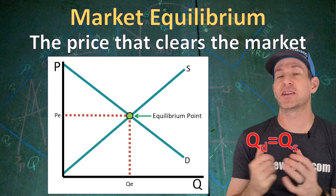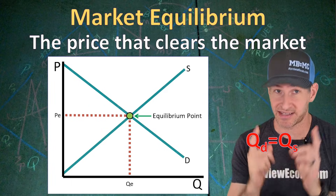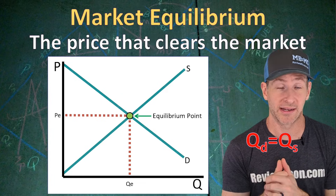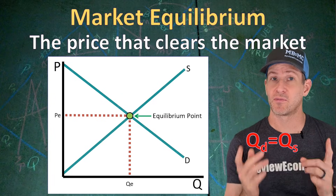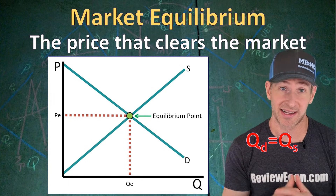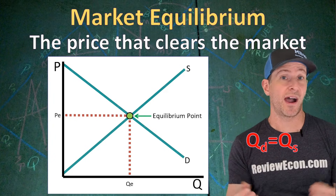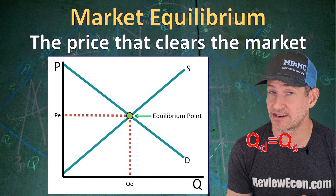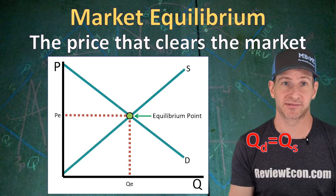That intersection between the two curves is our equilibrium point — it is the price where the quantity supplied equals the quantity demanded. If prices are above equilibrium, we're going to have a surplus and prices will eventually fall to that equilibrium point. If prices are below equilibrium, we're going to have a shortage and prices will eventually rise to that equilibrium point. That's why the price you typically see in a competitive market is the equilibrium price.